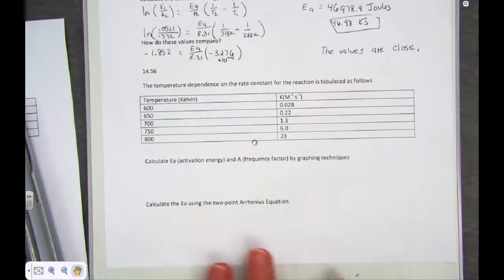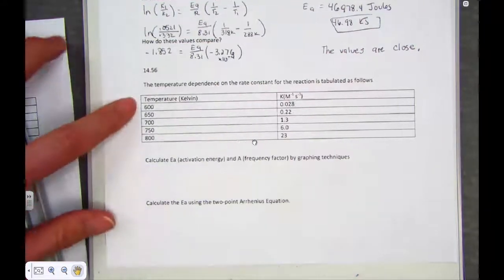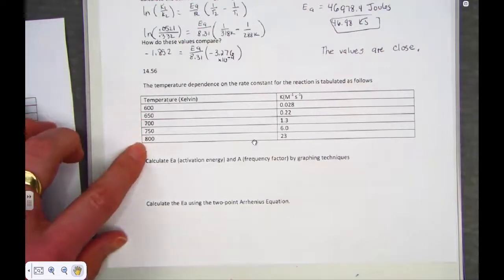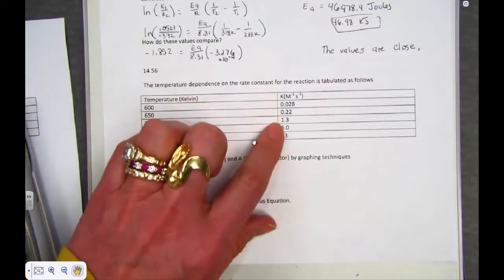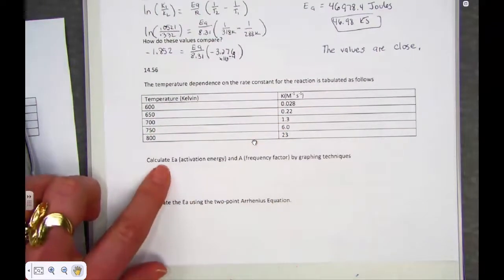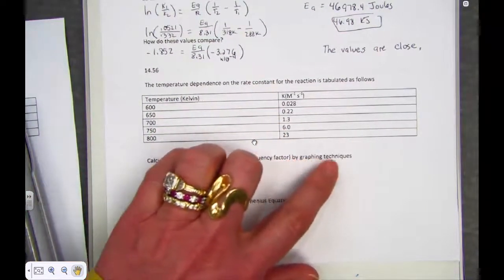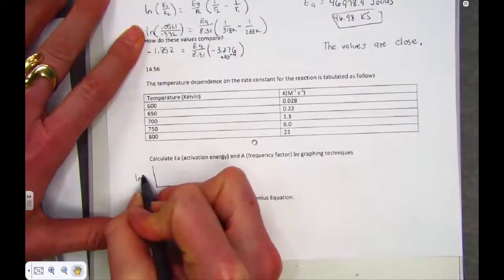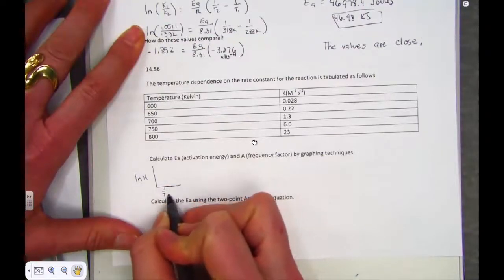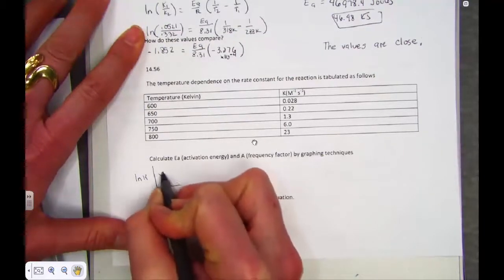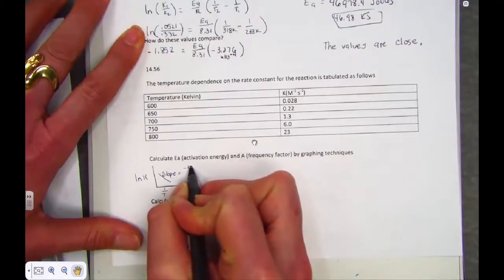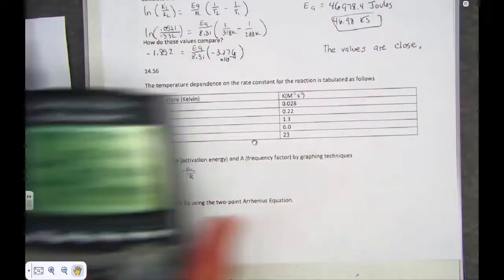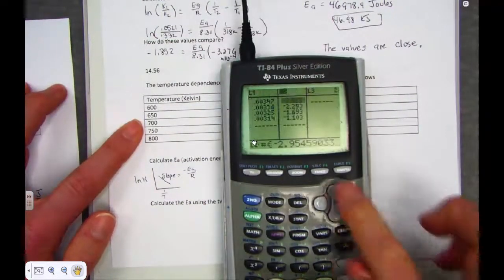We have one more to try together. It's number 56. Number 56 also has us graphing and using the two-point form of Arrhenius. Here we have Kelvin temperatures running at a series of trials and some K constants running. Calculate Ea and the frequency factor by graphing techniques. By graphing techniques, very similar to what we've done, we have to generate natural log of K's over the reciprocal of Kelvin temperatures and find the slope.